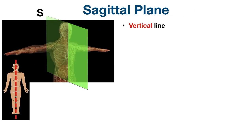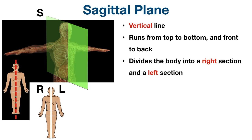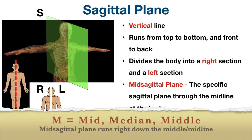The sagittal plane is one of the vertical planes. It's an imaginary line that runs from top to bottom and front to back, dividing the body into a right section and a left section. The mid-sagittal plane is the specific sagittal plane that runs through exactly the midline of the body, dividing it into equal right and left portions. It's also known as the median plane. Mid, median, and middle all start with M, which helps you remember the mid-sagittal plane runs right down the middle of the body.